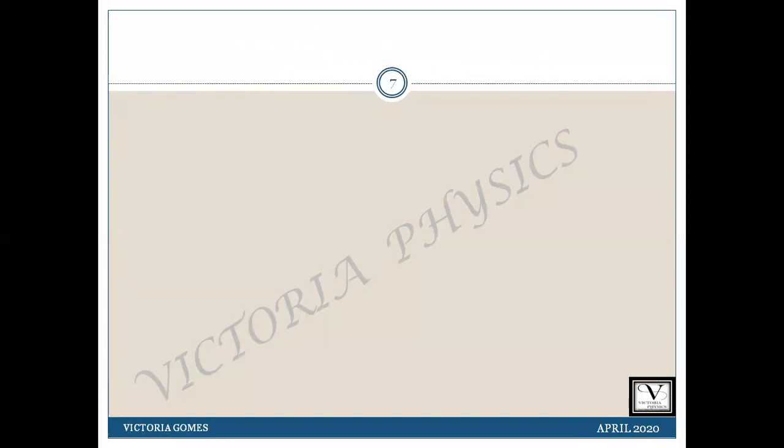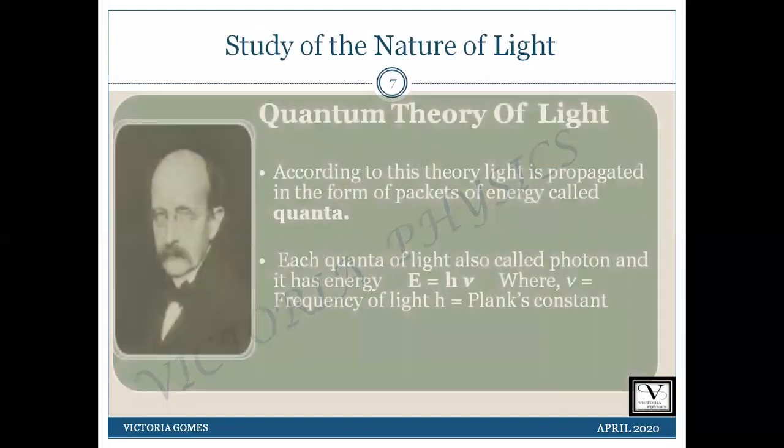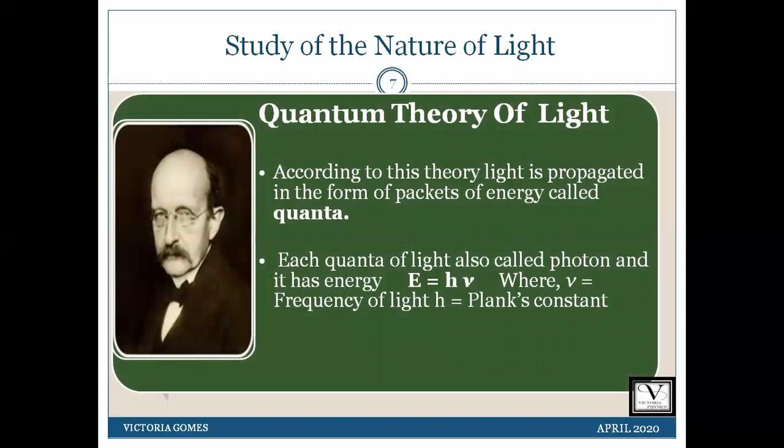Moving on to the most important theory, the quantum theory of light. Max Planck, a German physicist, proposed this theory to explain black body radiations. According to his theory, light is propagated in the form of small packets of energy called quanta or photons. Each quanta or photon has energy given by this expression equal to H mu, where mu is the frequency of the photon and H is the Planck's constant.